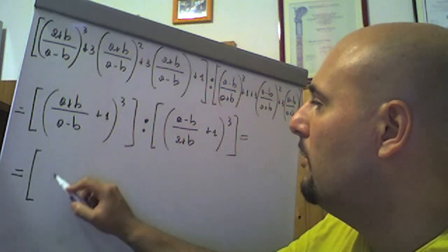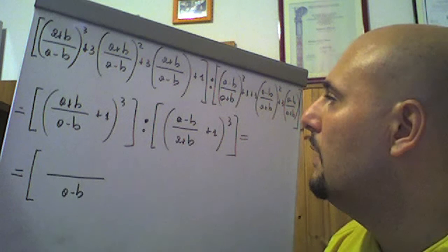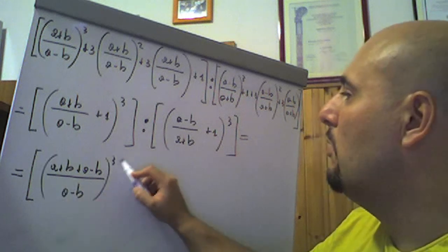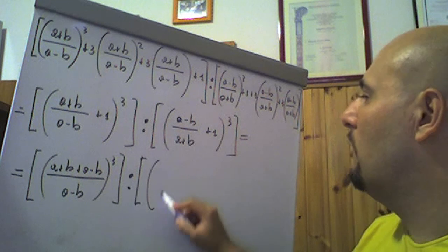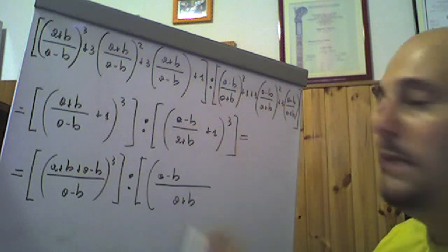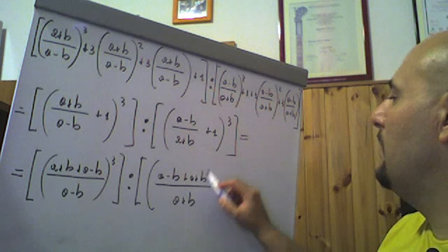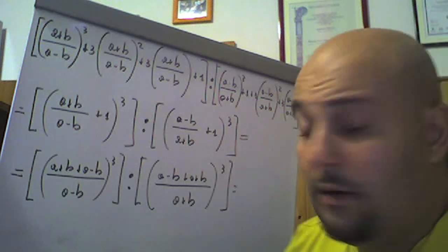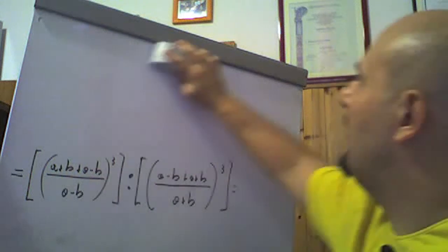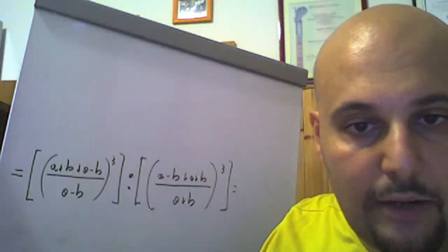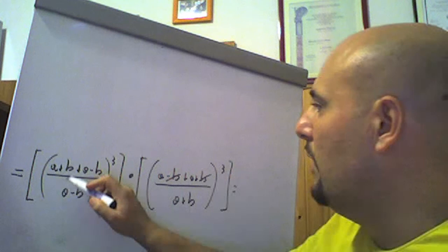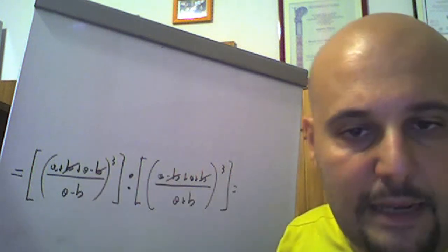Quindi abbiamo che la parentesi quadra la riapriamo: il minimo comune multiplo è (a meno b). A meno b diviso (a meno b) fa 1, per (a più b) fa (a più b); naturalmente più (a meno b), tutto quanto questo è elevato al cubo, chiusa la quadra, diviso, aperta la quadra, aperta la tonda: questa volta il minimo comune multiplo non è altro che (a più b). A più b diviso (a più b) fa 1, per (a meno b) fa (a meno b); a più b diviso 1 fa più b, (a più b) per 1 fa più (a più b). Chiusa la tonda al cubo, chiusa la quadra. Guardate la facilità di questa espressione; altrimenti avremmo dovuto metterci un sacco di tempo, invece ci siamo semplificando notevolmente le cose. Qua se ne vanno meno b e più b; se ne vanno anche b e meno b; rimane a più a qui e a più a lì, in entrambi i casi viene 2a.